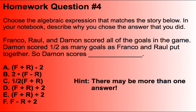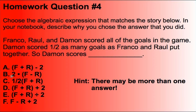Here is your last homework question for tonight. Choose the algebraic expression that matches the story below, and in your notebook describe why you chose the answer you did. Franco, Raul, and Damon scored all of the goals in the game. Damon scored half as many goals as Franco and Raul put together. So what does Damon score? Choose A, B, C, D, E, or F — there may be more than one answer, so click all answers that apply.